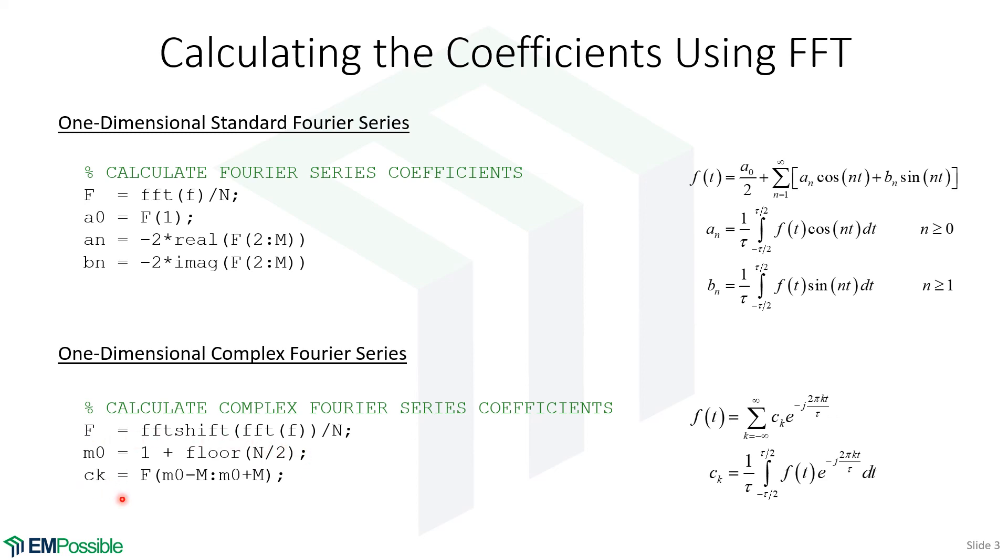When we extract our CN coefficients, which are the coefficients for our complex Fourier series, we center where we're extracting those numbers about M naught. In this case, we'll have two M plus one terms in our Fourier series. So that's very easy to get the complex Fourier series coefficients. And that's it.